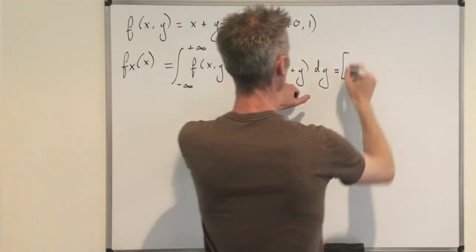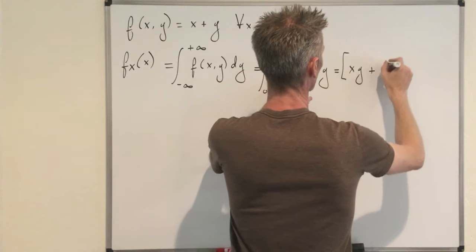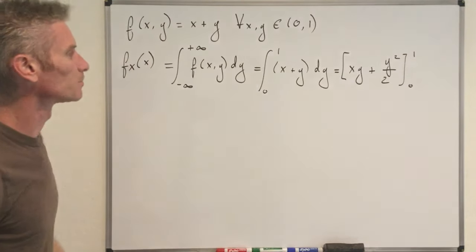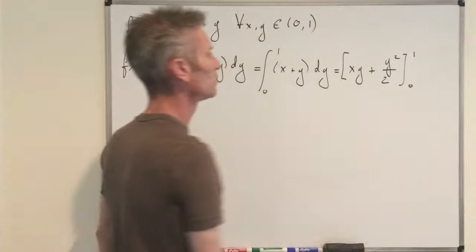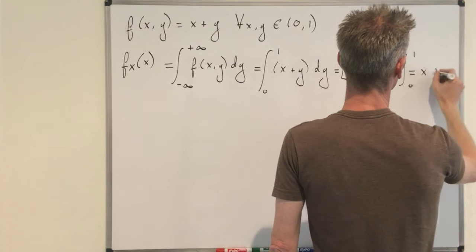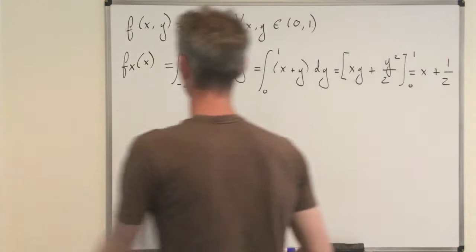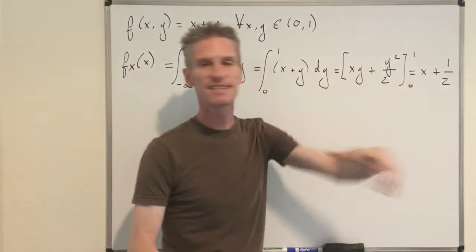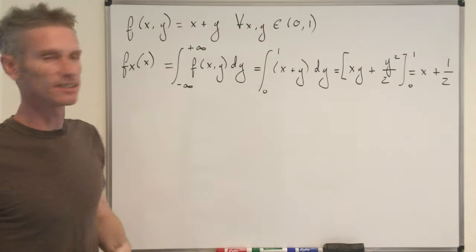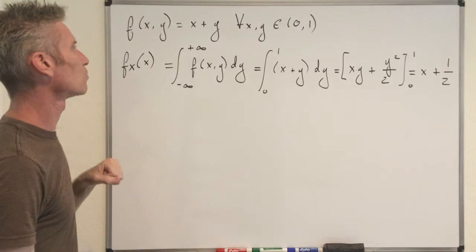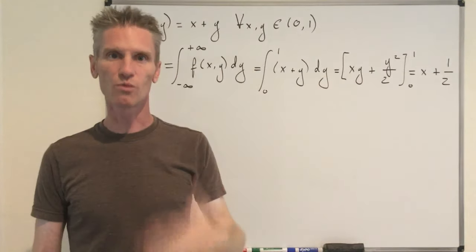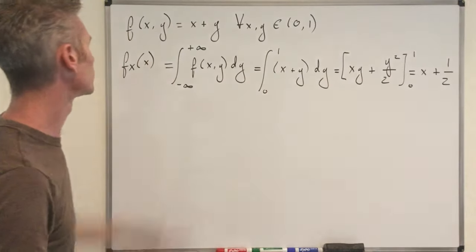That equals [xy + y²/2] evaluated from 0 to 1, which gives x + 1/2. So the density function of X is f_X(x) = x + 1/2 for all x in [0,1], and 0 outside. By symmetry, the density function of Y is f_Y(y) = y + 1/2 for all y in [0,1], and 0 outside.